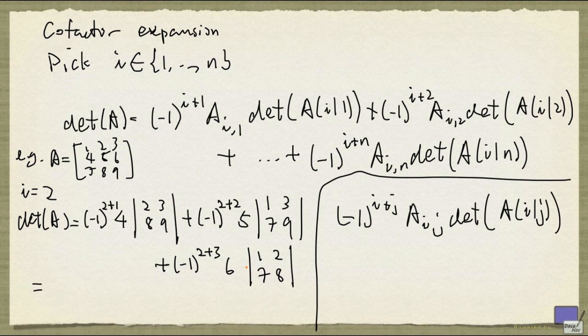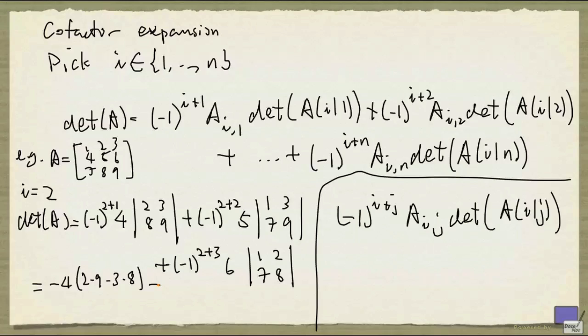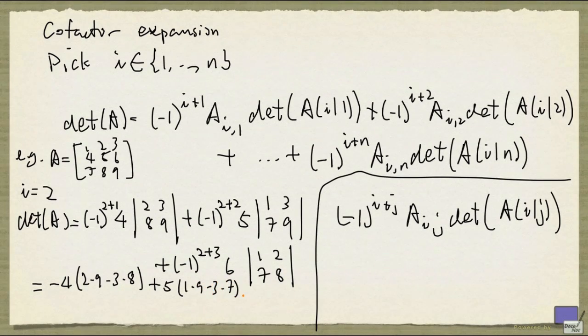Now 2 by 2 determinants are easy to compute. So this is -4 times (2 times 9 minus 3 times 8), plus 5 times (1 times 9 minus 3 times 7), minus 6 times (1 times 8 minus 2 times 7). This is just -24 minus 60 plus 36, and that's equal to 0.